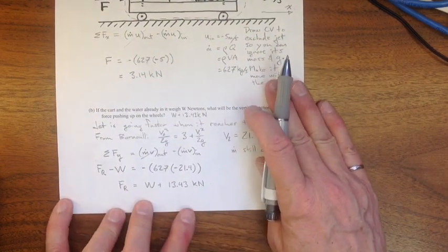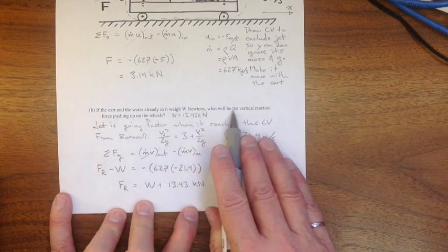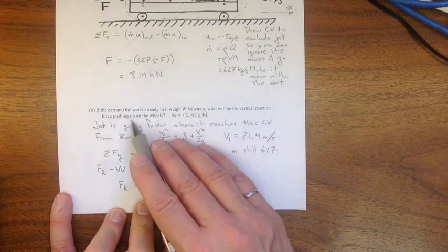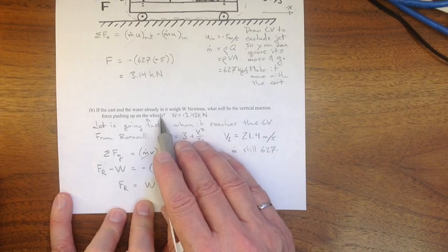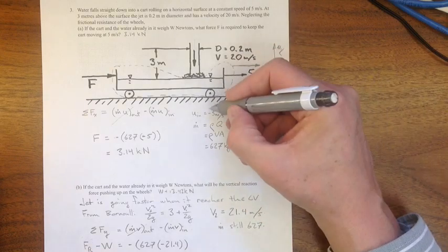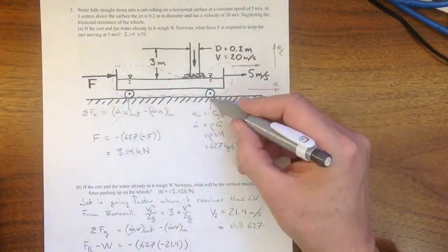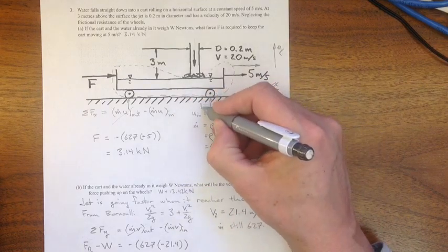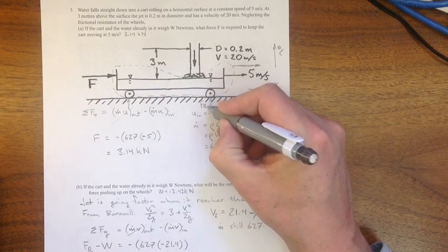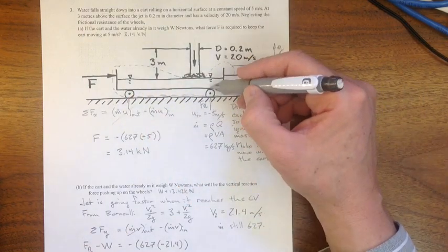Moving on to the second part of the question, if the cart and the water already in it weigh W newtons, what will be the vertical reaction force pushing up on the wheels? So, here's our little cart, there's going to be a force acting on those wheels, and the combination of that force we'll call FR, the total FR between the wheels acting upwards.